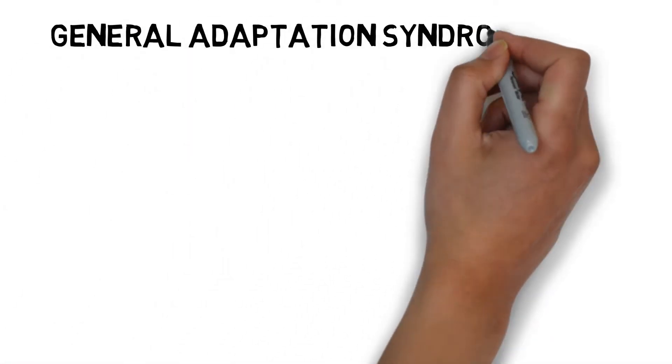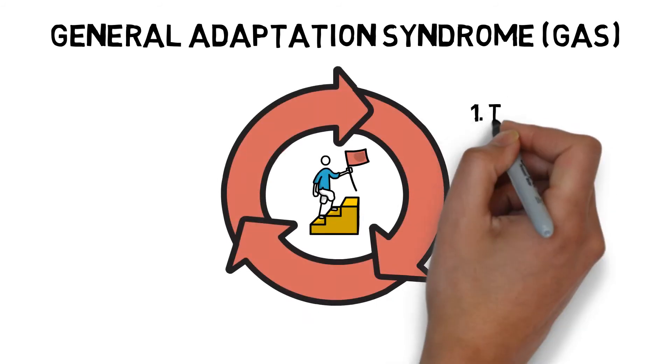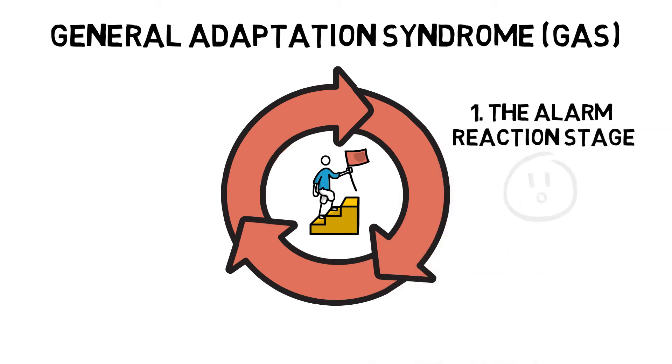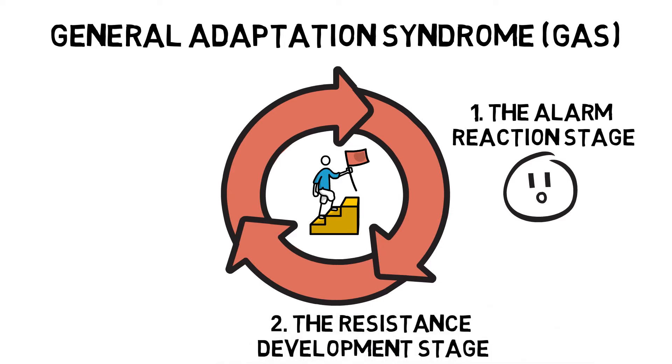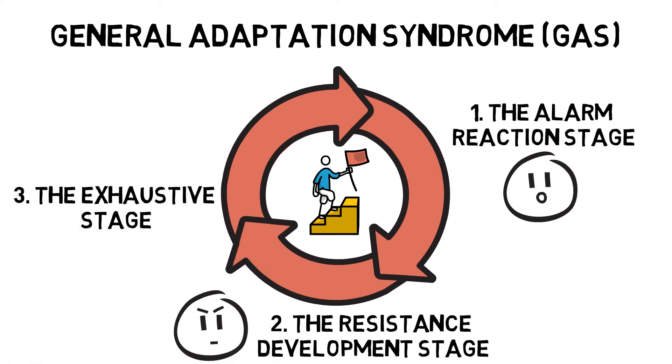The general adaptation syndrome is how the body responds and adapts to stress. The alarm reaction stage is the initial reaction to the stressor. The resistance development stage is when the body adapts in order to resist the stress more efficiently. And the exhaustion stage, which is when persistent application of stress will exhaust or distress the system.